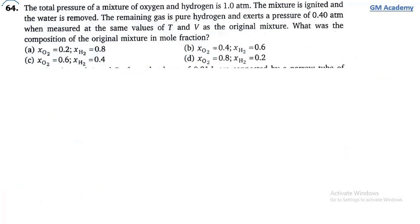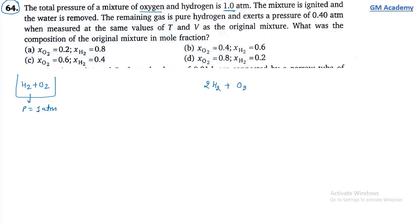Question 64: The total pressure of a mixture of oxygen and hydrogen is 1 atm. The mixture is ignited and water is removed. The remaining gas is pure hydrogen. We need to find the mole fractions of O₂ and H₂. Reaction: H₂ + ½O₂ → H₂O.